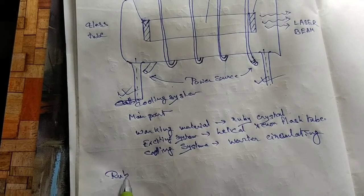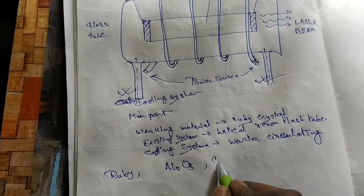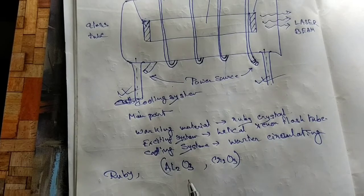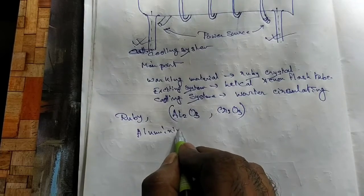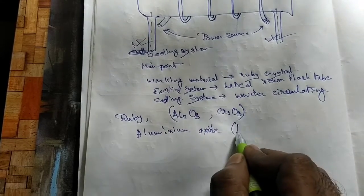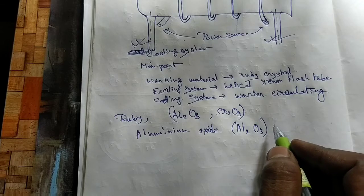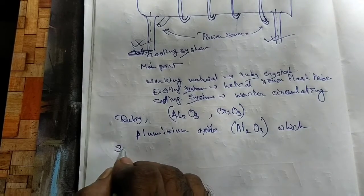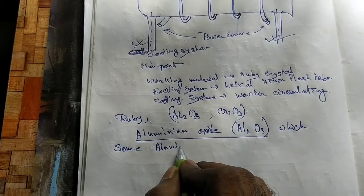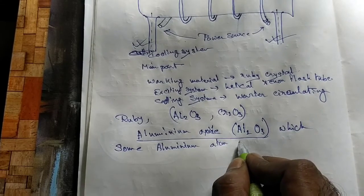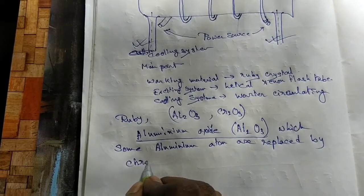Now, what is ruby? Ruby is nothing but Al2O3 with Cr2O3 — aluminum oxide in which some aluminum atoms are replaced by chromium atoms.